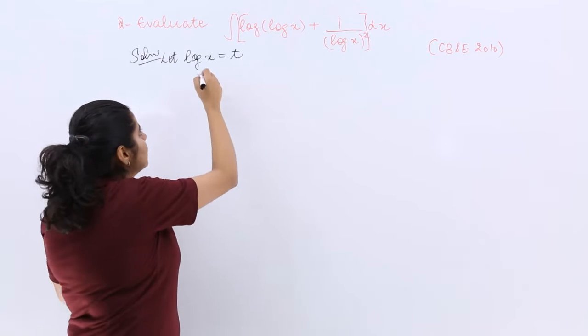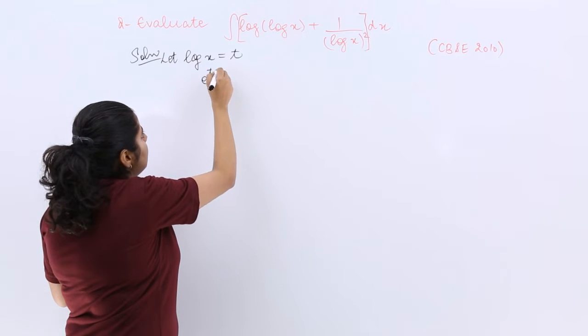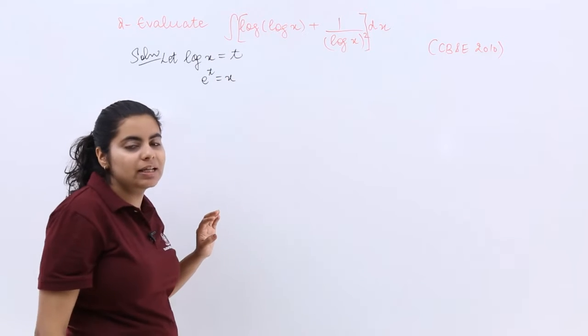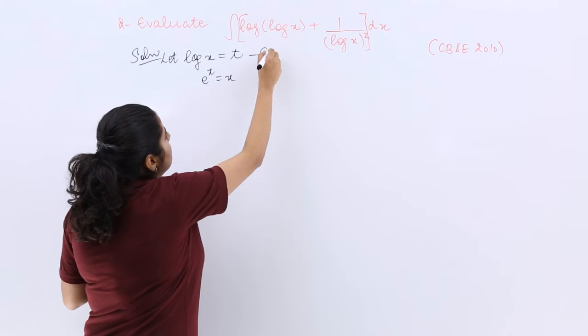then I know that e raised to the power t would be x because this e base would go to the other side. So this is your equation number 1, this is your equation number 2 and you have to differentiate equation number 1.